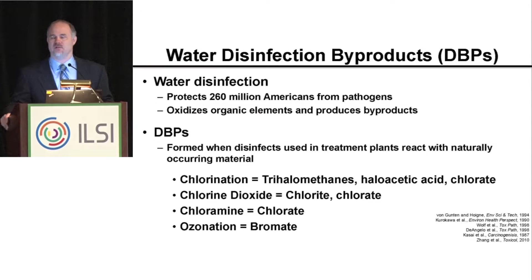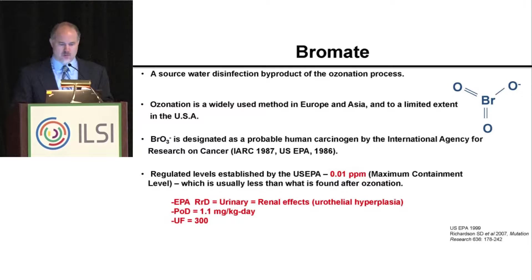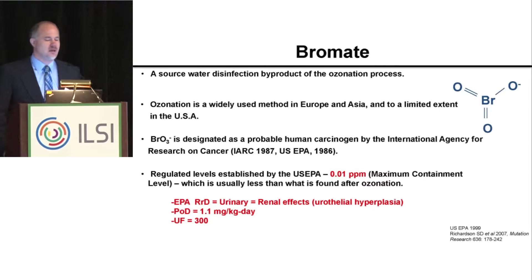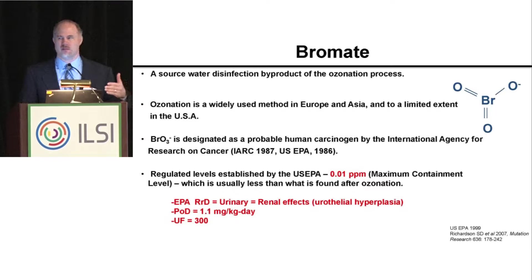It produces bromate. So in some regards, you're changing one thing for another. We don't know what the risk of these are and that's what we're going to talk about. I'm going to do this as a case study looking at bromate. This is produced because of ozonation. Ozonation is not really used a lot in the United States — it is in Europe and Asia. Singapore is one of the places where we're trying to do this.